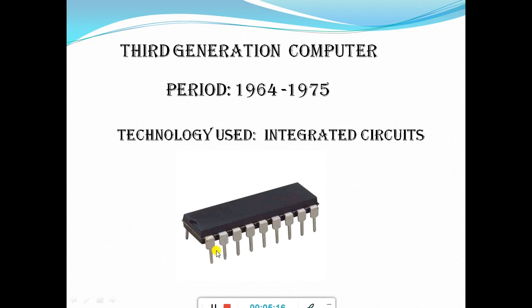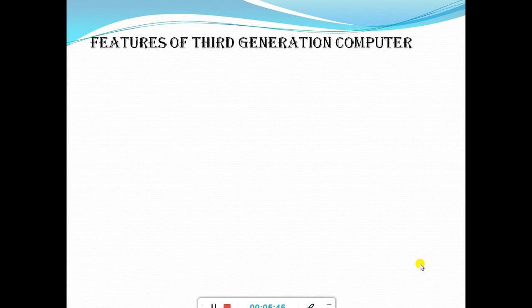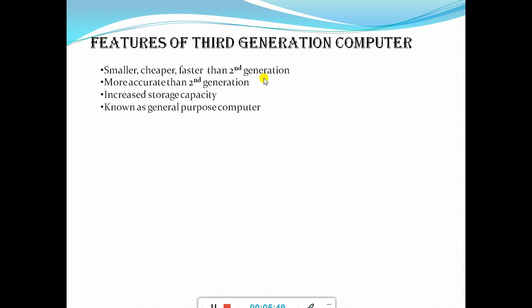If we use an integrated circuit compared to a transistor, it is more helpful. When many transistors are placed together they form the integrated circuit, and integrated circuit performance is high while consuming little power compared to the transistor. Integrated circuits are mainly used in computers, mobile phones, and other home appliances. Features: smaller, cheaper, faster, and more accurate than the second generation; increased storage capacity due to the use of integrated circuits; also now known as the general purpose computer.